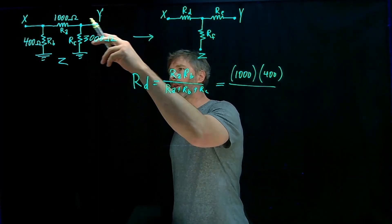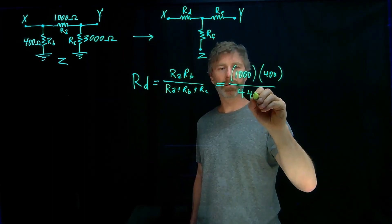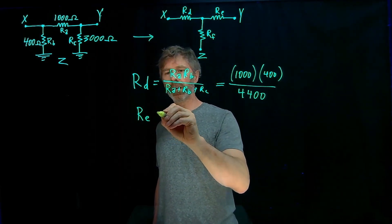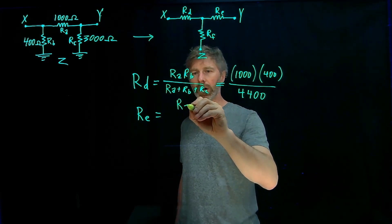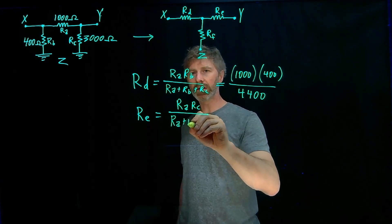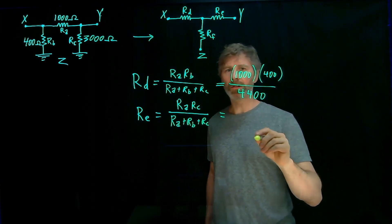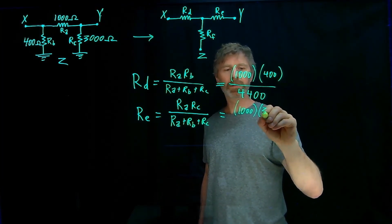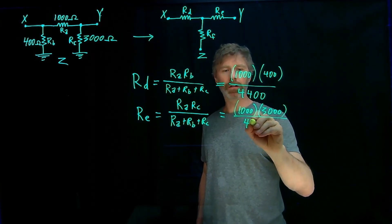Re is equal to Ra times Rc over Ra plus Rb plus Rc, and so that's equal to 1000 times 3000 over the same denominator, 4400.